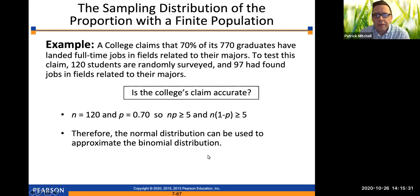So here's an example where that comes up. A college claims that 70% of its 770 graduates landed full-time jobs in fields related to their majors. To test this claim, 120 students are randomly surveyed and 97 had found jobs in fields relating to their majors. Is the college's claim accurate? So we start off the same way by checking whether we can use the normal approximation to the binomial. N times p is 120 times 0.7, which is definitely greater than or equal to 5. And n times 1 minus p, so that would be 120 times 0.3, is also greater than or equal to 5. So we can use this approximation.